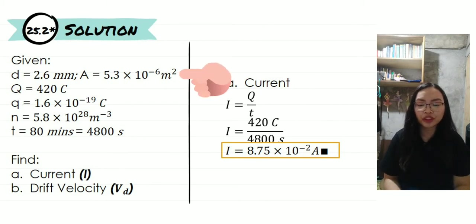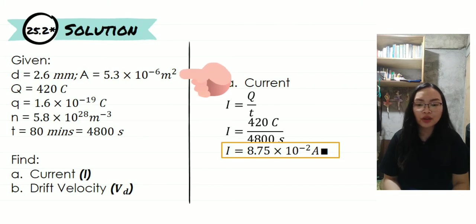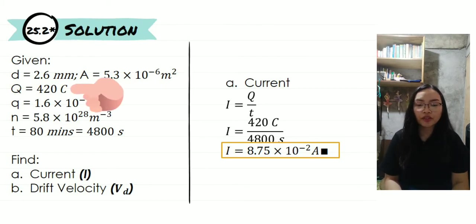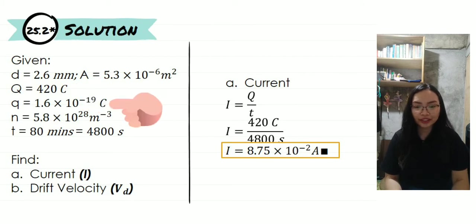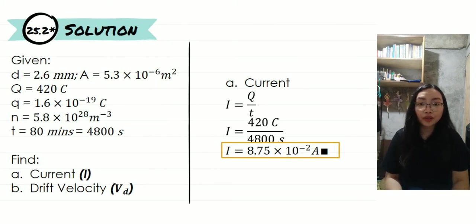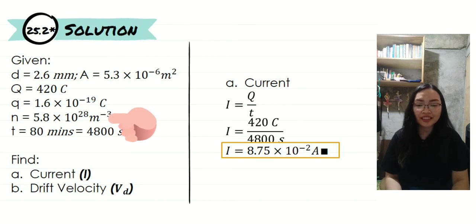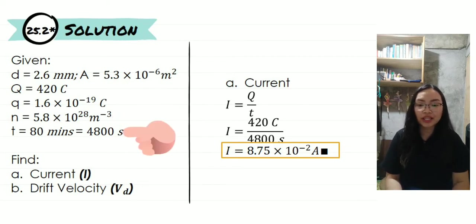We have our diameter, which is equal to 2.6 millimeters. Using this value, we will obtain the area of the wire, which is equal to 5.3 times 10 to the negative 6 meters squared. We also have the charge of the wire, which is equal to 420 coulombs. We also have our constant, which is the charge of an electron, equal to 1.6 times 10 to the negative 19 coulombs. We have the number of free electrons per cubic meter, denoted by small letter n, equal to 5.8 times 10 to the 28 per cubic meter. And lastly, we have our time, which is equal to 80 minutes, or when converted, is equal to 4,800 seconds.